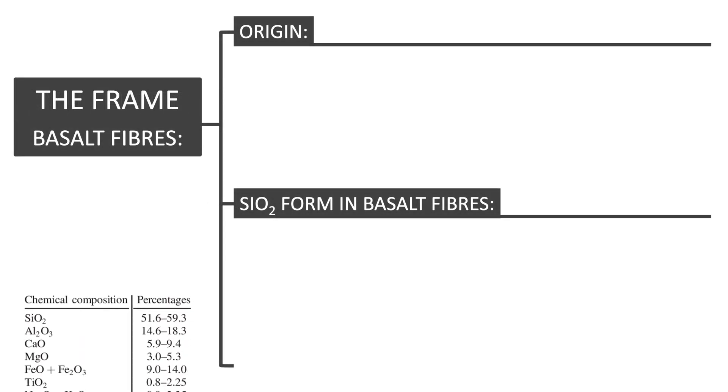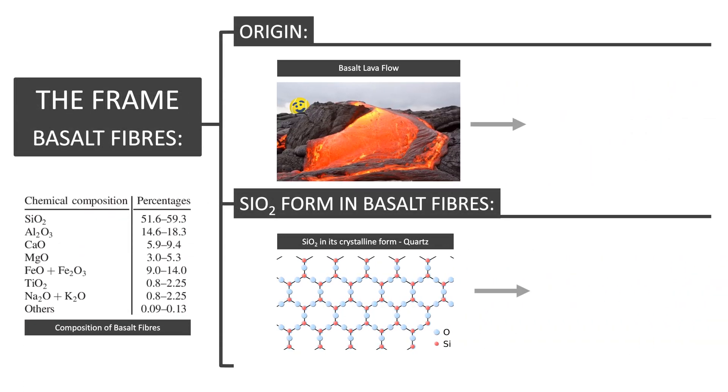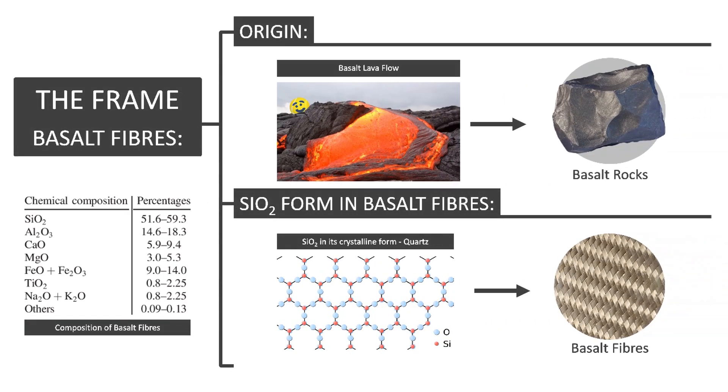Tennis manufacturer Wilson have been known to use basalt fibres in their rackets. These fibres are produced from basalt rocks, formed as a result of the rapid cooling of basalt lava. Main component of basalt rocks is silicon dioxide, SiO2, which is arranged in the polymeric structure in its crystalline form, quartz. This gives basalt properties similar to fibreglass, a material commonly used in tennis rackets in the past.